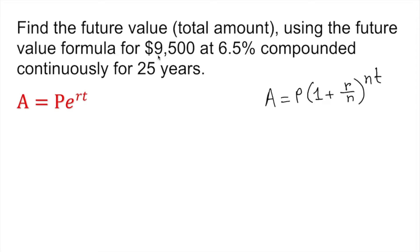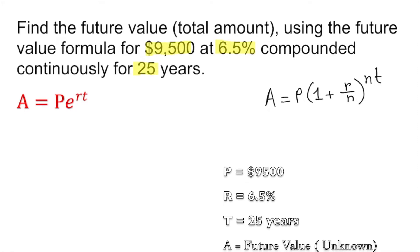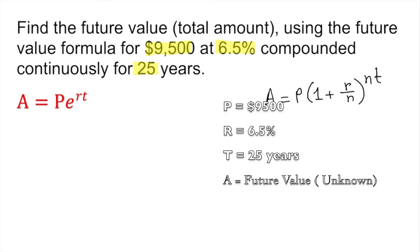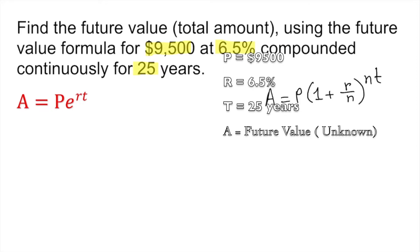So what are we given? We are given the principal, we are given the rate, we are given the year. Everything is given actually. By the way, this is the principal, this is the rate, and this is the year. Obviously this is continuous, so it is exponential actually, so we can just plug this in here.